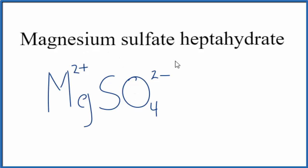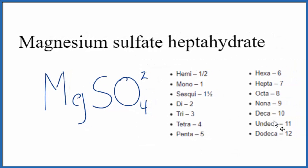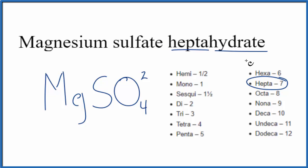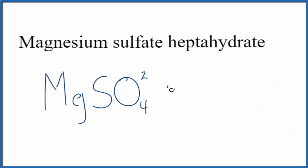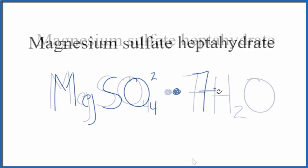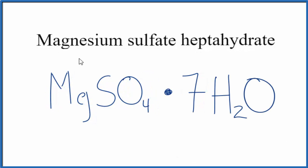Now let's look at the heptahydrate. If we look at this little chart right here, 'hepta' means seven. And you can think of 'hydrate' like being hydrated, having drunk enough water. So heptahydrate means seven water molecules. We'll put a dot here, and then the seven water molecules.